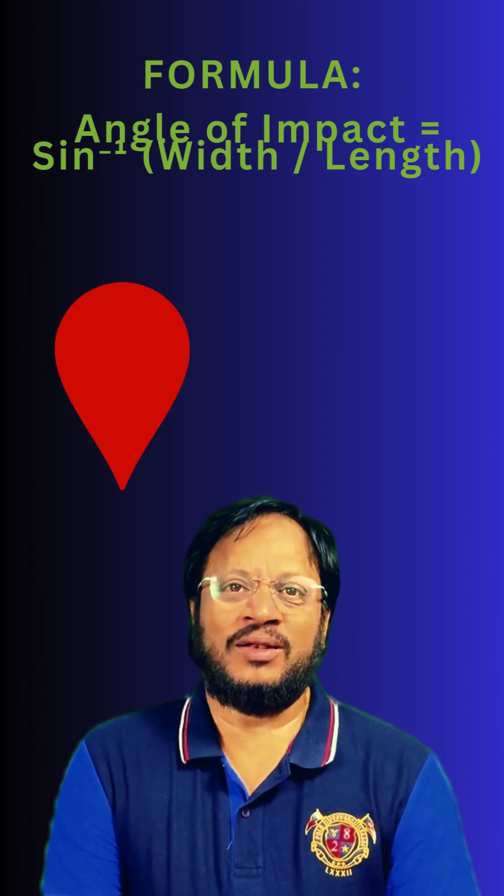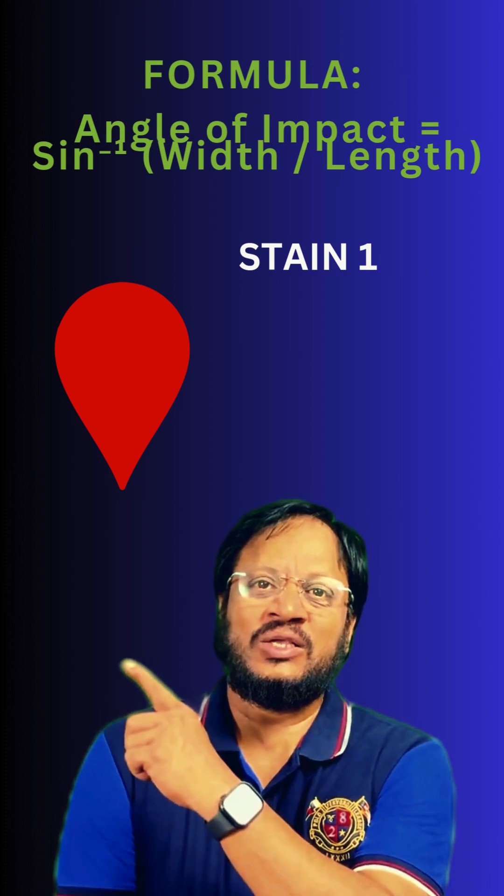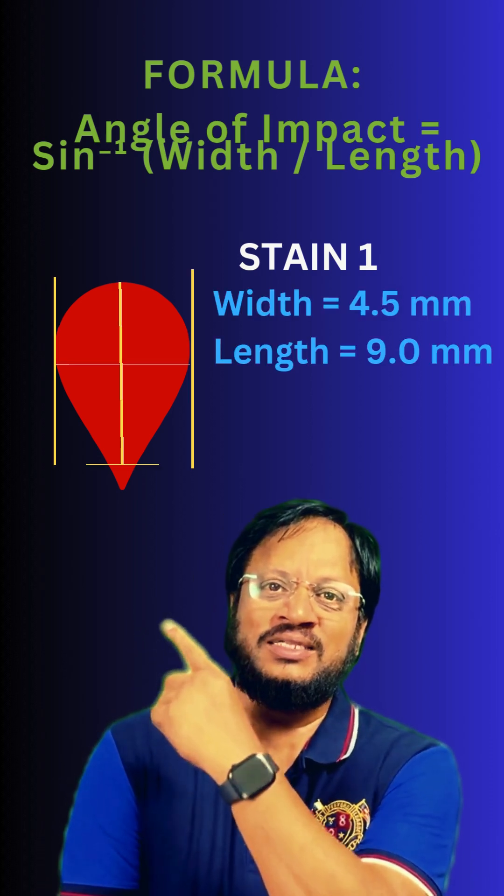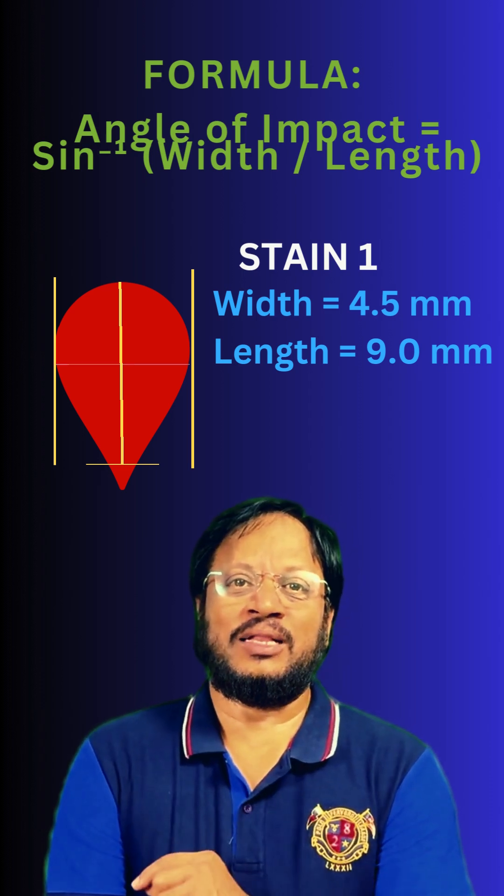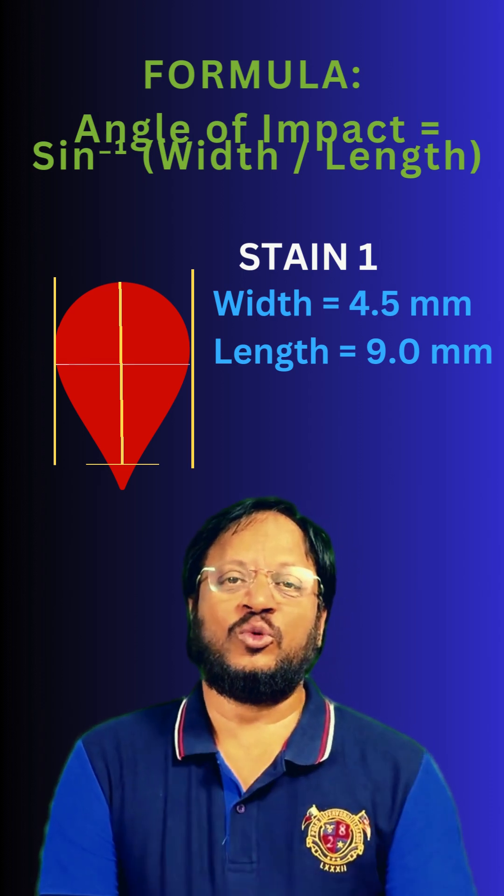Let us look at stain 1. Here its width is 4.5 millimeters and length is 9 millimeters. Divide width by length, that is equal to 0.5.